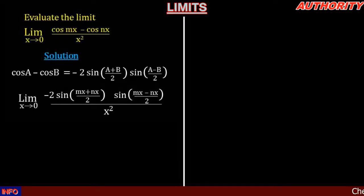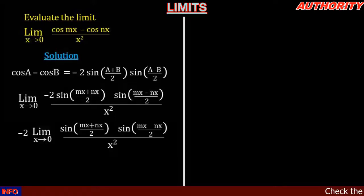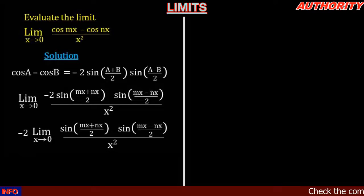Now let's take this minus two outside. That means we are going to have minus two times the limit as x approaches zero of sine of (mx plus nx) all over two, times sine of (mx minus nx) all over two, all over x squared.